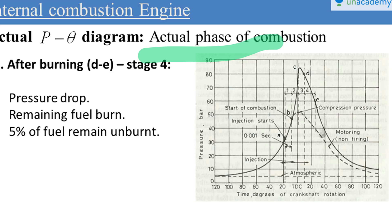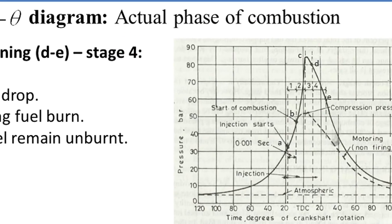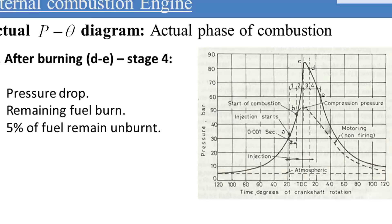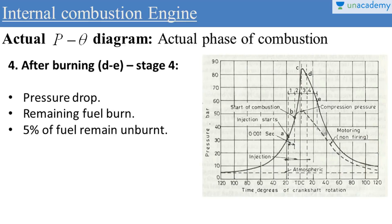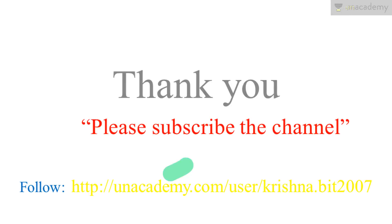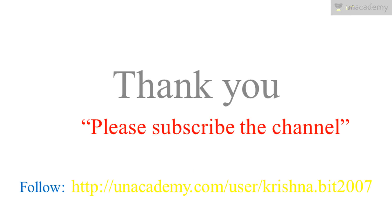These were the 4 stages of combustion of a compression ignition engine, and this is the P-theta diagram representing the complete combustion process of a compression ignition engine. Thank you so much and please subscribe the channel for more lectures.